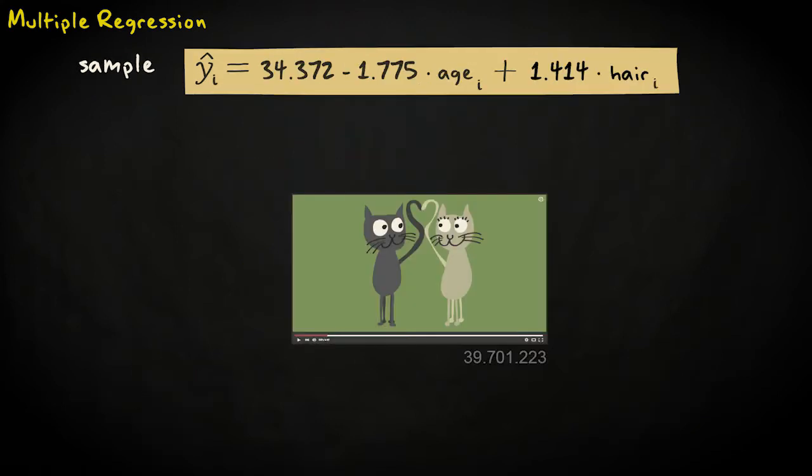Say we find this regression equation, y hat sub i equals 34.372 minus 1.775 times age sub i plus 1.414 times hairiness sub i.